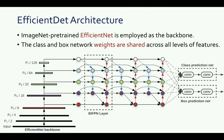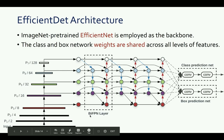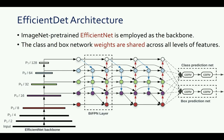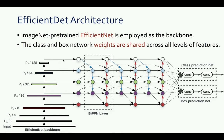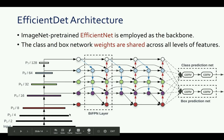Here is the EfficientDet architecture. There are three main components: the EfficientNet backbone (which could have been any backbone like ResNet or VGG), the BiFPN layer — which stands for Bi-directional Feature Pyramid Network — and the classification or prediction head. We pass an image through the backbone and extract features right before every max-pool, giving us a feature pyramid. This pyramid is passed into repeating BiFPN layers, and then the last output pyramid is used to make final predictions.